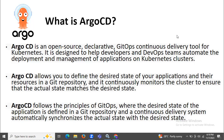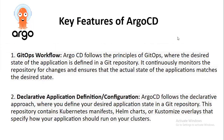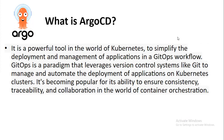In simple language, ArgoCD is a Kubernetes controller responsible for continuously monitoring. It is a powerful tool for Kubernetes to simplify the deployment and management of applications in a GitOps workflow. GitOps is a paradigm that leverages version control systems like Git to manage and automate the deployment of applications on Kubernetes. So ArgoCD is a CD tool — a continuous delivery tool.